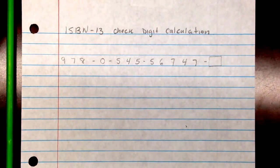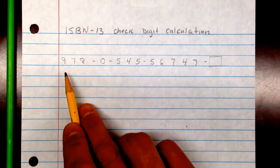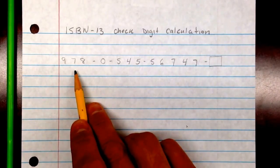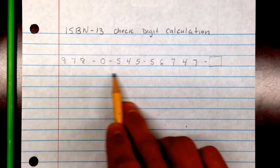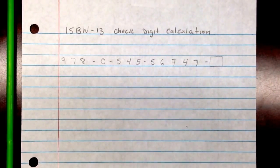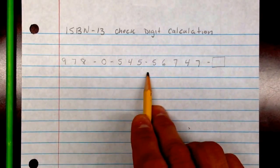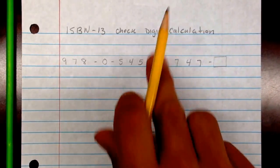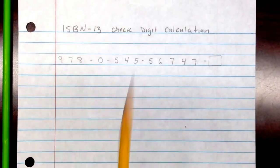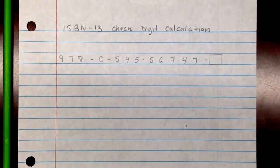The ISBN-10 starts off counting with 10, 9, 8, 7, 6, and so on going down. It starts with a 10 first. This is totally different than the ISBN-10 calculation.